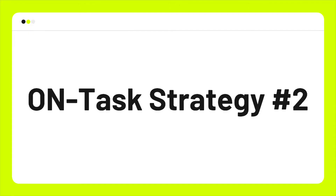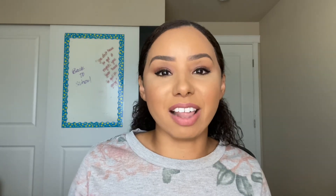The next strategy is giving students positive recognition through something tangible — a little piece of candy, or maybe gum if you allow it in your classroom. Something that makes them feel good. So a student might say, 'Where did you get that gum?' and they reply, 'I got it from Ms. Cole because I was doing what I was supposed to be doing.' Tangible rewards work very well at any age.